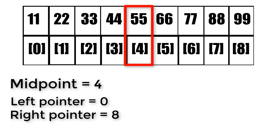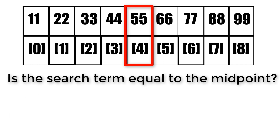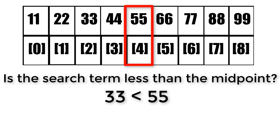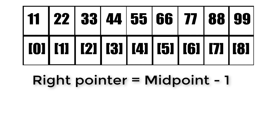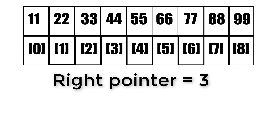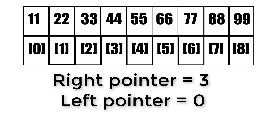Now we have to compare our search term to the midpoint. Is the search term equal to the midpoint? If it is, we found the value and we can stop. But 33 isn't equal to 55, so we have to continue. Now we check if 33 is less than 55 — indeed it is. Based on this we now know that 33 must lie in the first half of this array. So we can forget about 55 and beyond. Anything from index 4 and beyond is useless, so we set the right value to the midpoint minus 1, which is 4 minus 1 equals 3.